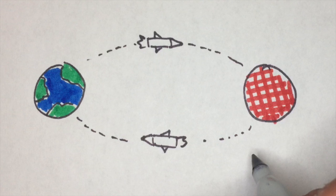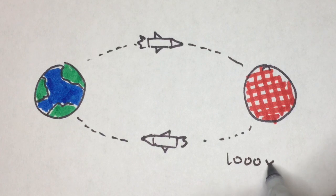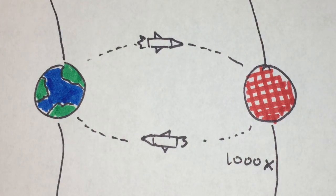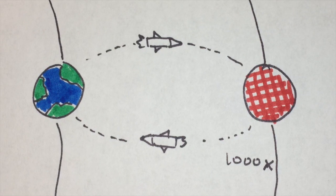According to Musk, the spaceships should be designed so that they can fly around a thousand times each, and the trip will happen when Earth and Mars align favorably, which usually happens once every 26 months.